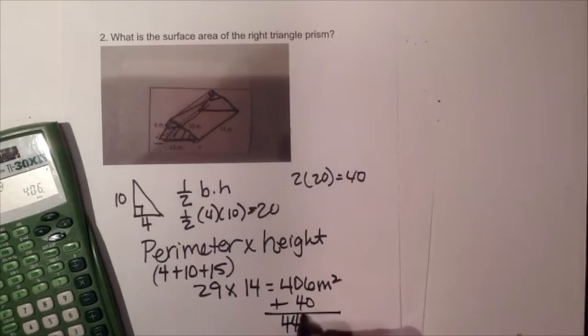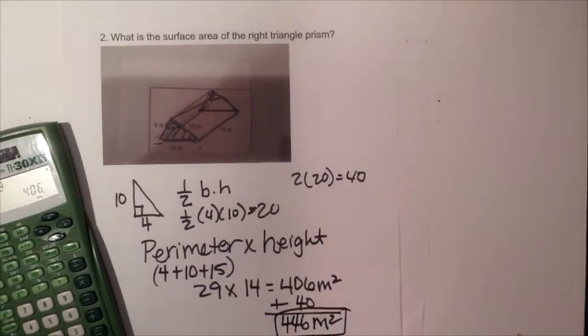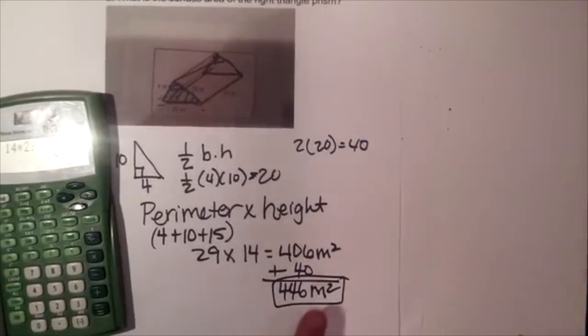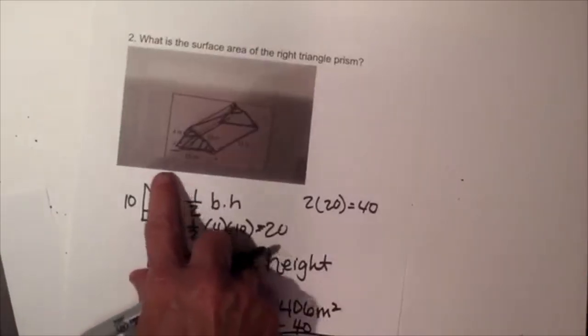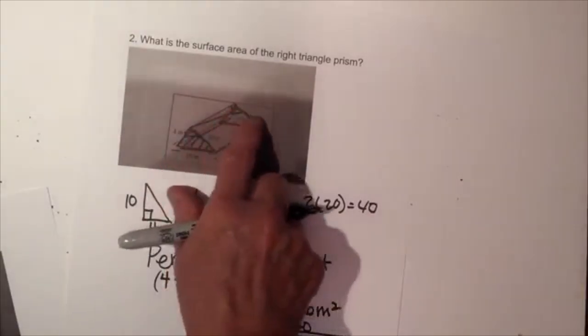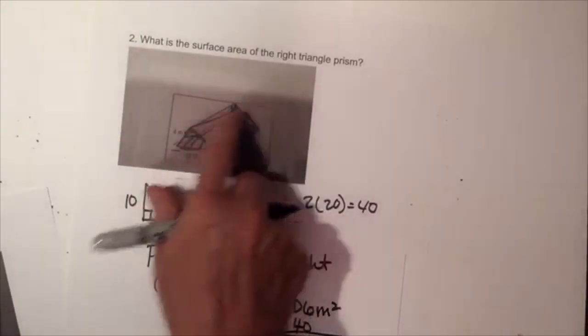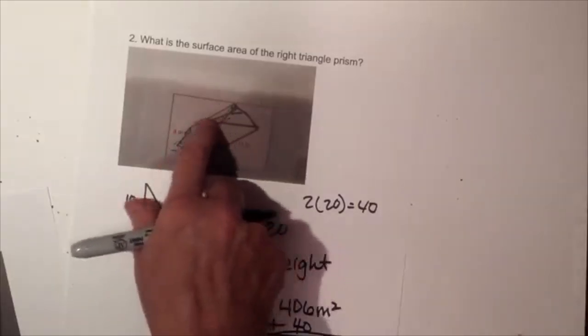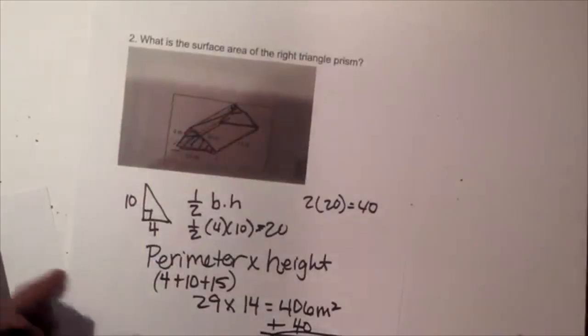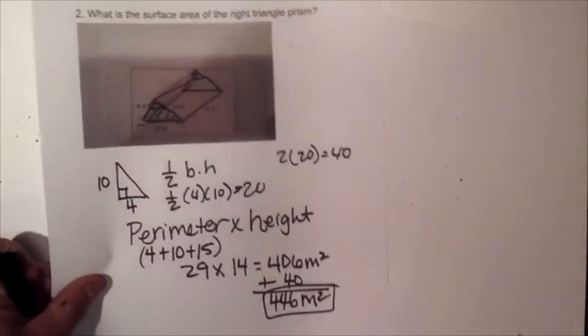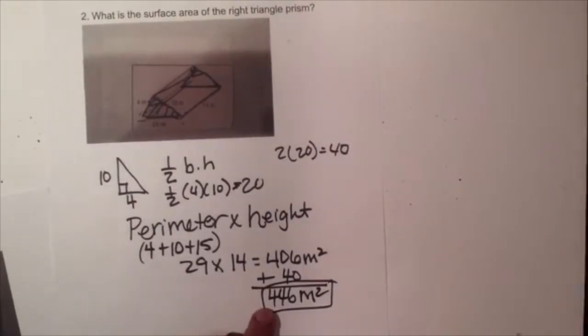Now I add the lateral area and the two triangular end caps: 406 plus 40 gives me 446 square meters — that's the total surface area of the triangular prism. To recap: find the area of the two triangles, then take perimeter times height for the lateral area, and add them together.